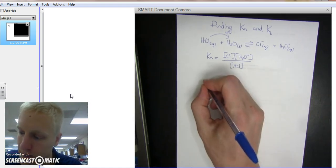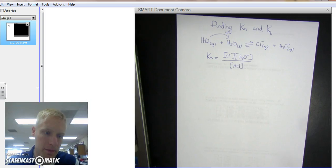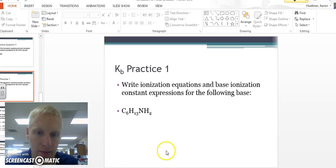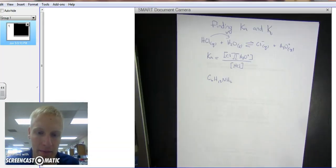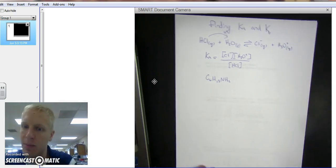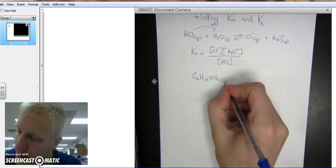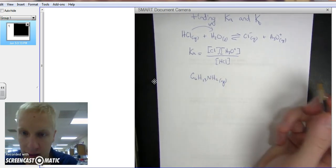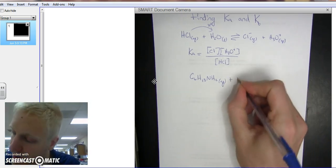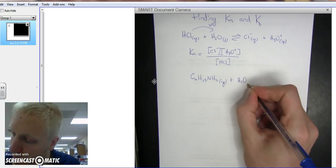So here's an example. C6H13NH2 is a base. We want to write the ionization equation first. The base can dissolve in water, so it's aqueous. We will dissolve it in water, so we add H2O liquid.